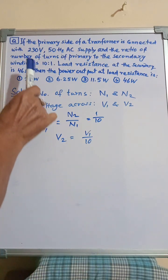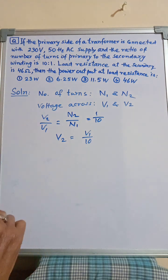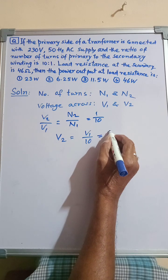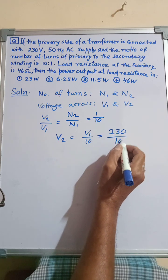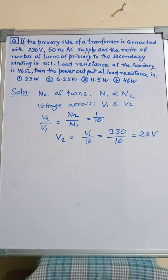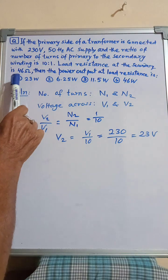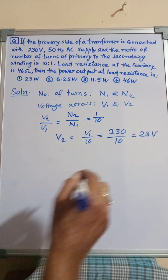Now it is given that V1 is equal to 230 volts across the primary, therefore we can get V2 is equal to V1 by 10 which is equal to 230 divided by 10 which is equal to 23 volts.